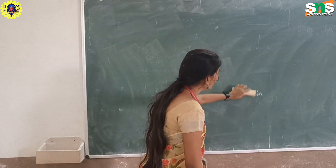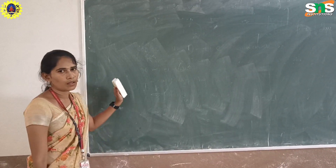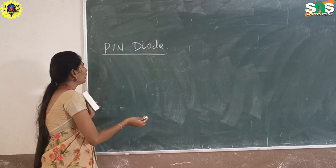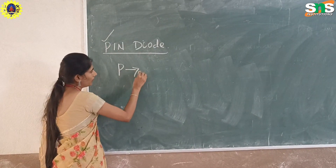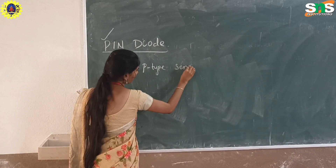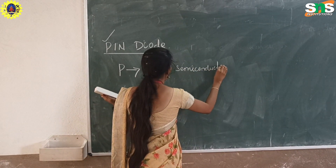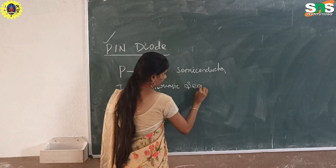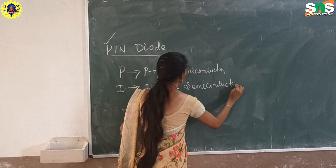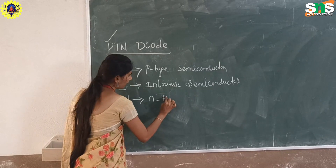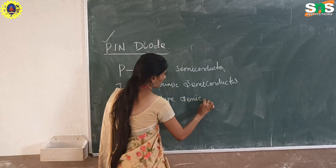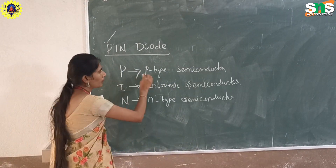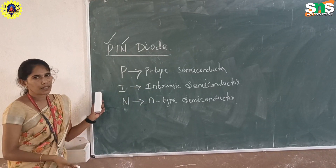Next, what are the applications of semiconductors? One application is the PIN diode. The PIN diode is a semiconductor device where P stands for P-type semiconductor, I is denoted by intrinsic semiconductor, and N is denoted by N-type semiconductor.